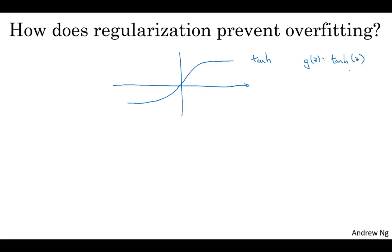notice that so long as z is quite small, so if z takes on only a smallish range of parameters, maybe around here, then you're just using the linear regime of the tanh function. It's only if z is allowed to wander out to larger values or smaller values like so, that the activation function starts to become less linear.